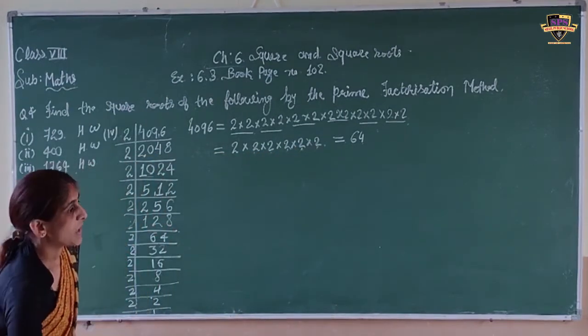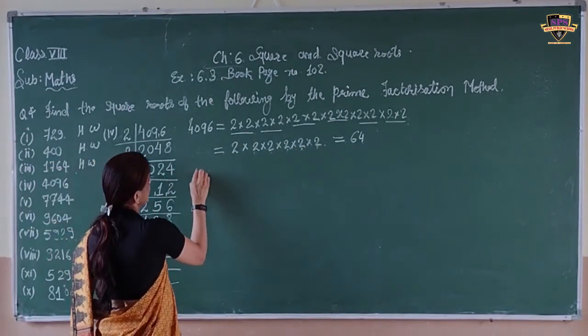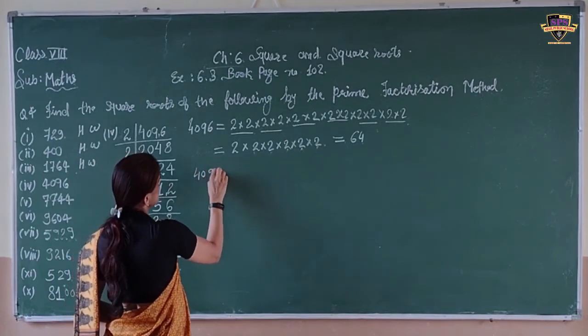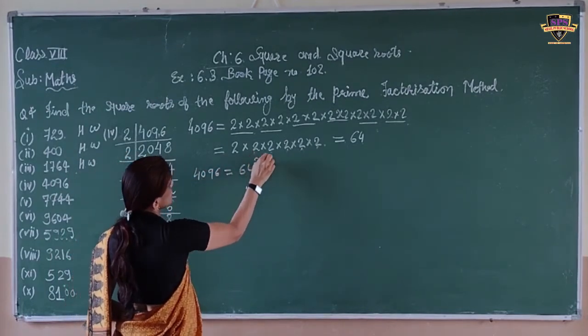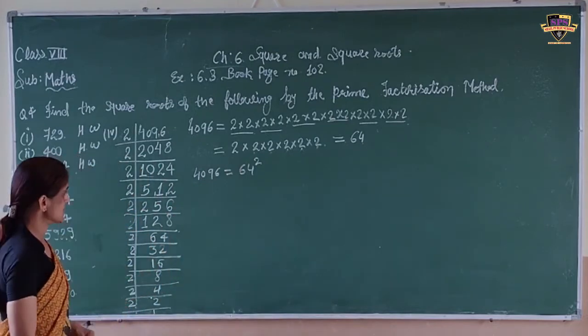We can verify: 4096 is the square root of 64. The answer is 64.